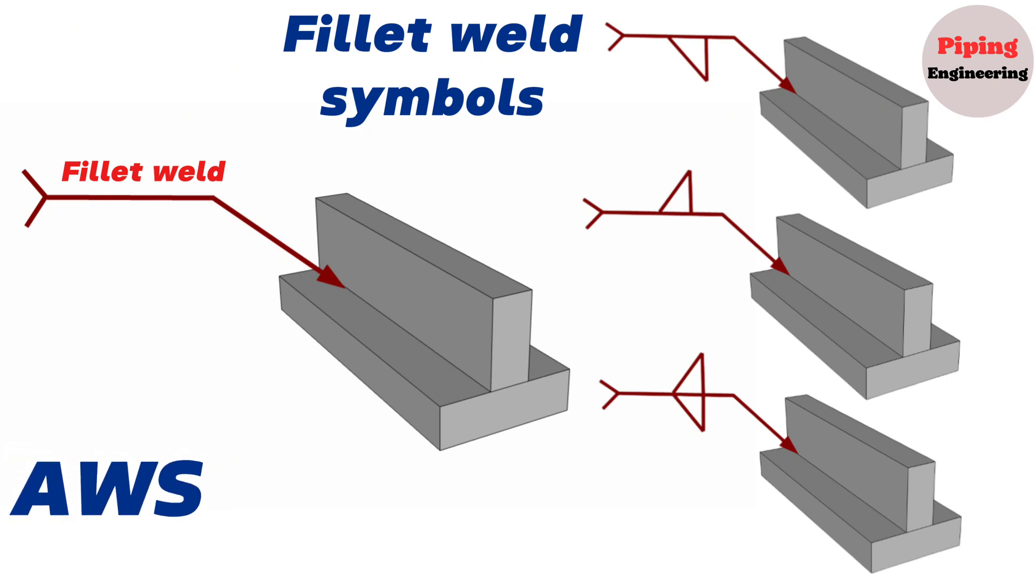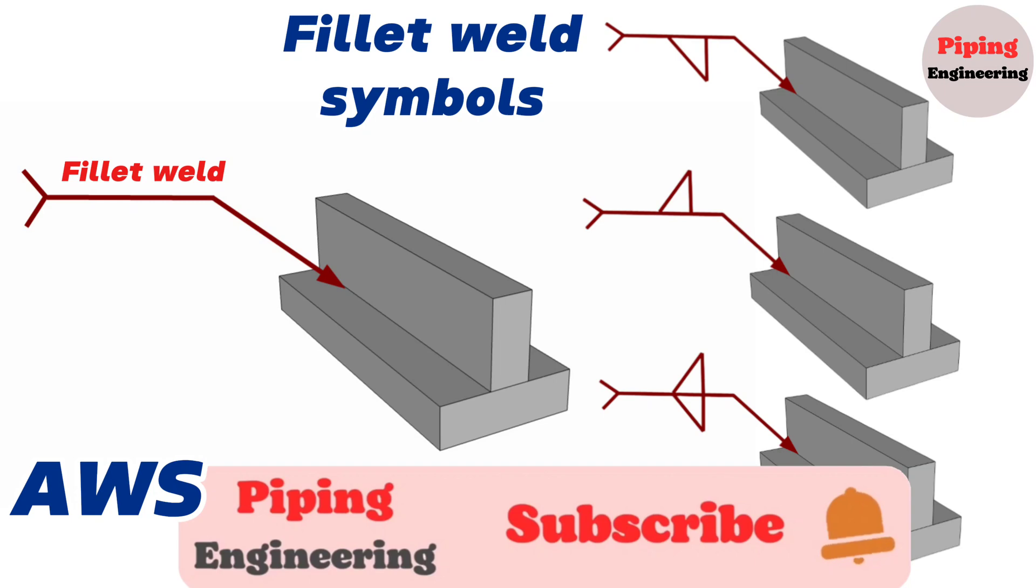This weld is used when the joint has two members coming together to form an intersection of commonly 90 degrees. The welding symbol above or below the reference represents the location on which the weld is carried out.